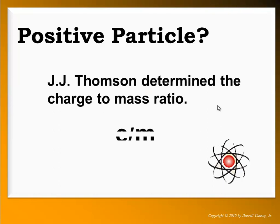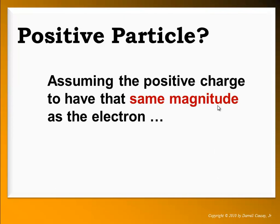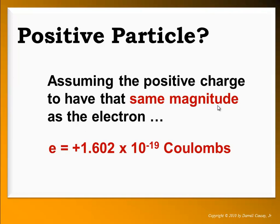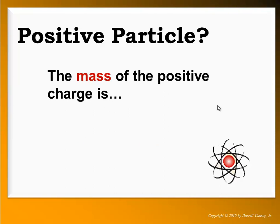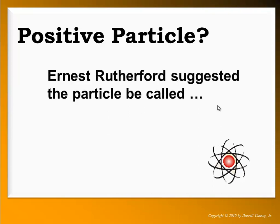J.J. Thomson determined the charge-to-mass ratio of the positive charge. Assuming the positive charge had the same magnitude as the electron, the proton was assigned a charge of +1.602 times 10 to the negative 19 coulombs. From this, the mass of the positive charge was determined to be about 1.63 times 10 to the negative 27 kilograms — about 1,836 times larger than the electron. The proton turned out to be about the same size as the hydrogen ion, which is just a proton. Rutherford suggested the particle be called a proton, and the negative corpuscle became known as the electron, as George Stoney had suggested.